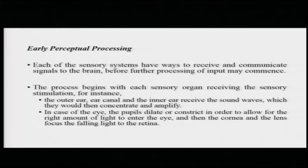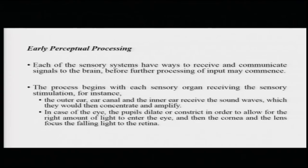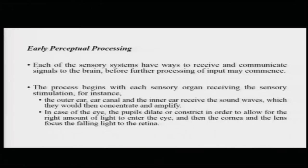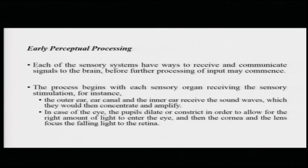The process begins with each sensory organ receiving the sensory stimulation. For instance, the outer ear, the ear canal, and the inner ear receive sound waves, funnel them inward, and concentrate and amplify the sound waves, which are then transduced by the hair cells or receptors in the inner ear and inside the basilar membrane in the cochlea. In the case of the eye, the pupils dilate or constrict to control light entering the retina, and the cornea and lens adjust to focus light on the retina, which contains photoreceptor cells called rods and cones that convert light into neural impulses.